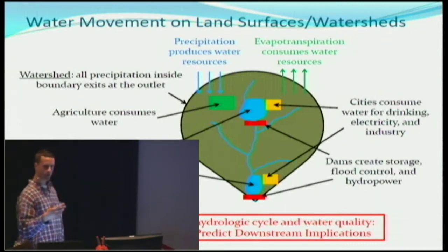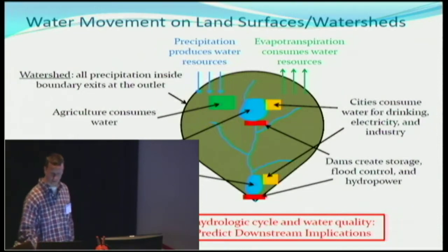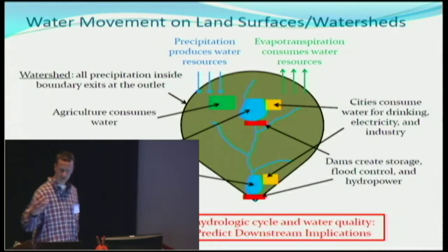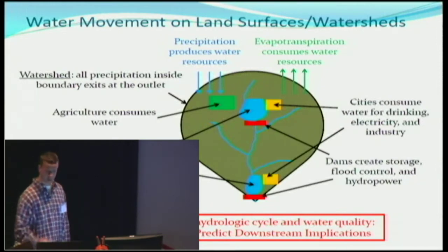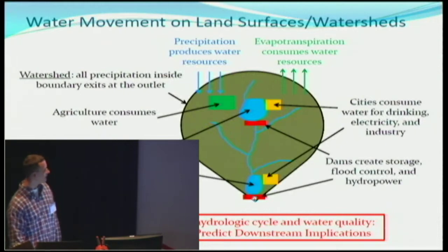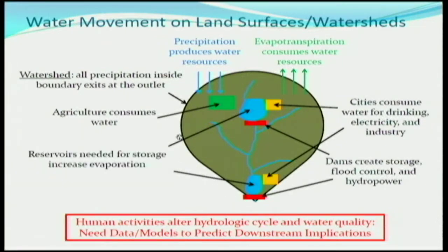Hydrology is inherently data-driven because there are so many different factors, as this diagram shows. Agriculture consumes water; we withdraw water for electricity and other industries; we build dams to slow water movement. If you have an elevation map, you can follow the ridge line and create a geographic region — a catchment — where everything inside feeds out to that point, and precipitation and other processes inside that region flow to that outlet.